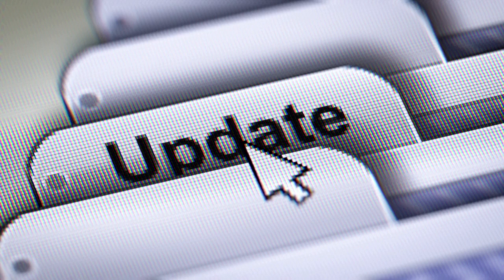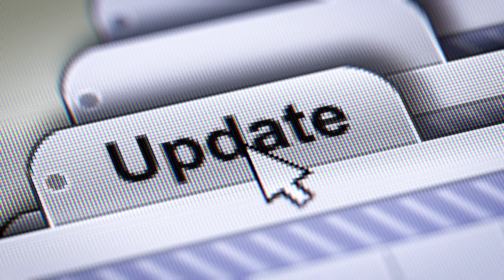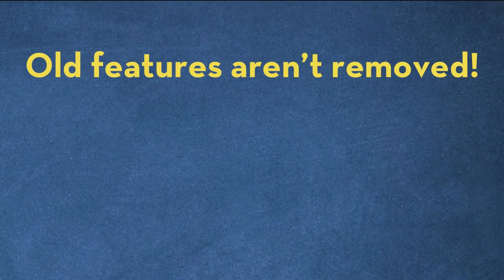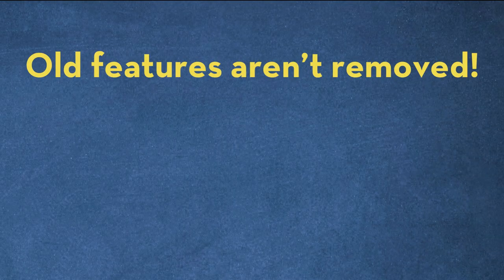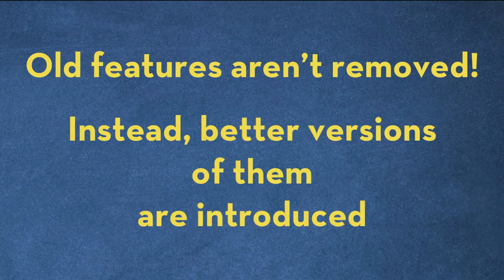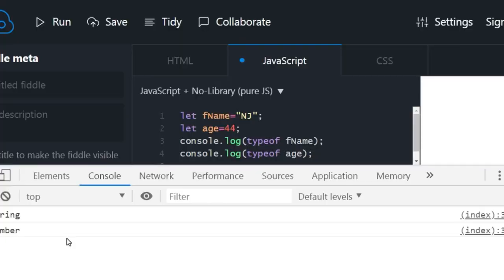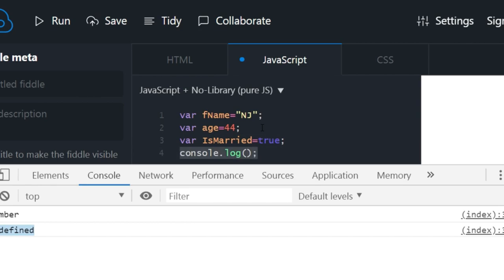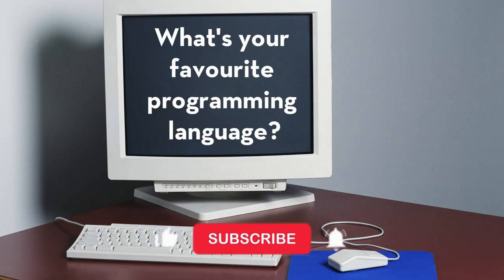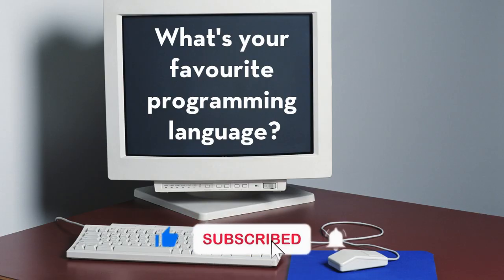We can say that to this day, ES6 is the only major update that has happened. The good thing is that new versions are always completely backward compatible, with only occasional minor cleanups. Old features aren't removed — instead, better versions of them are introduced. A great example is declaring variables via let, which is an improved version of the var keyword. What is your favorite programming language? Let us know in the comments — thank you!